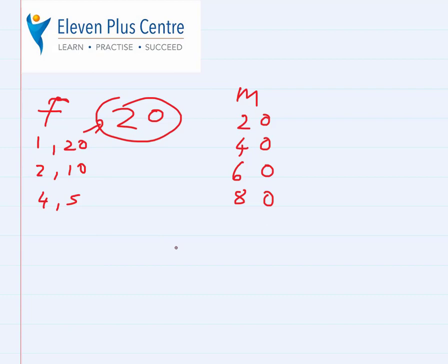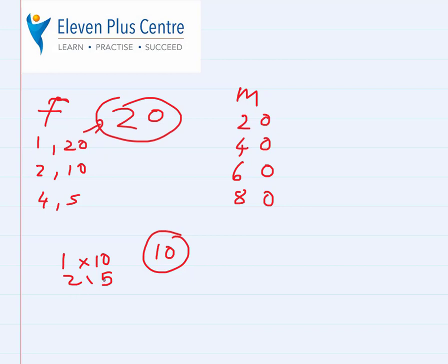Multiples, on the other hand, are numbers that the number itself makes up — what's in the 20 times table. So 20, 40, 60, 80 — these are multiples of 20. Now let's look at 10. The factors of 10: 1 times 10 and 2 times 5 — that's it. And the multiples of 10 are those in the times table: 10, 20, 30, 40, and so on.